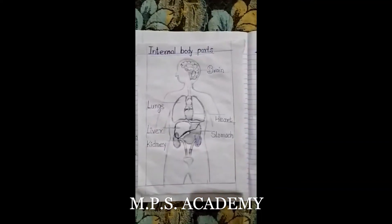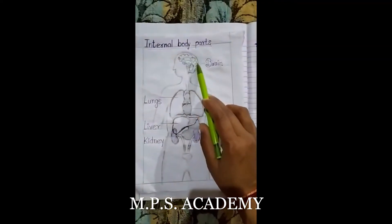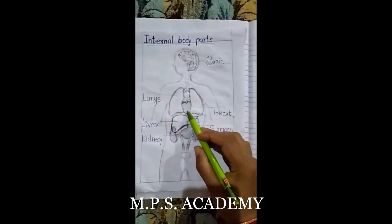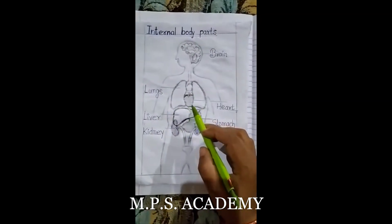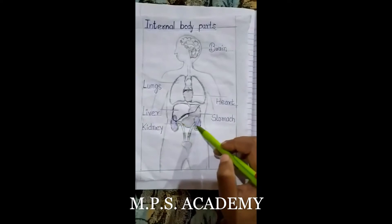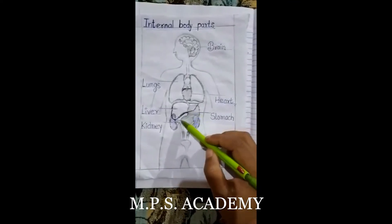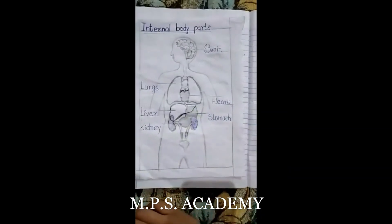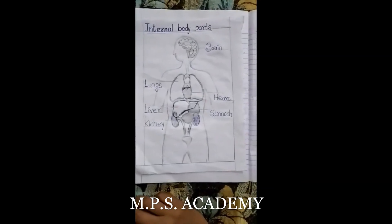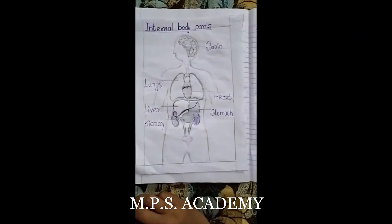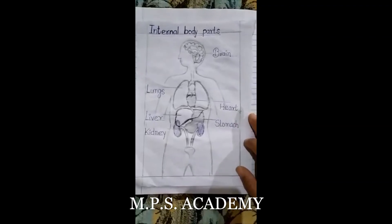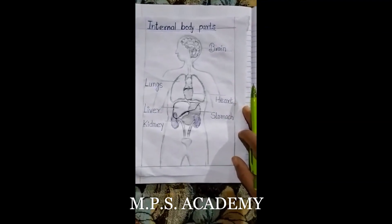Students, let's look at this figure again. Brain, lungs — we have two lungs — then heart — hamaara dil — liver, kidney — kidney bhi hamare paas do hain — and stomach. Also note: liver is the largest internal body part, and the largest external body part is skin. Overall, the largest body part is skin.